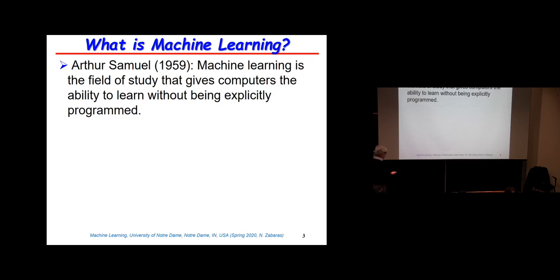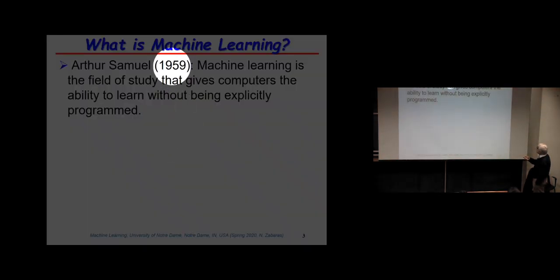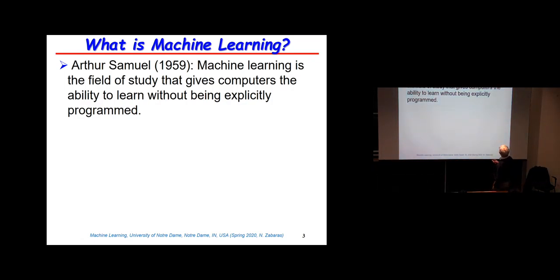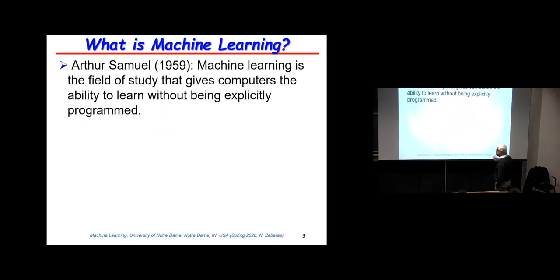What is machine learning? In the context of computer science, when you program anything in the 30s, 40s, 50s, and 60s, you would say to the computer: if this, do that; if this, do that. You would try to list all possible actions depending on what is going on. Machine learning is trying not to require from the user an explicitly programmed list of commands on what to do, but to have a computer that is actually learning what it has to do.